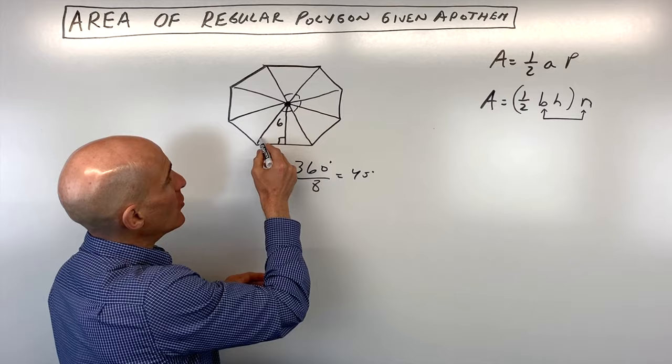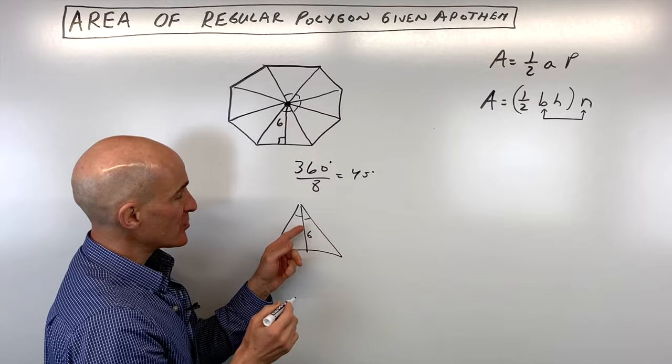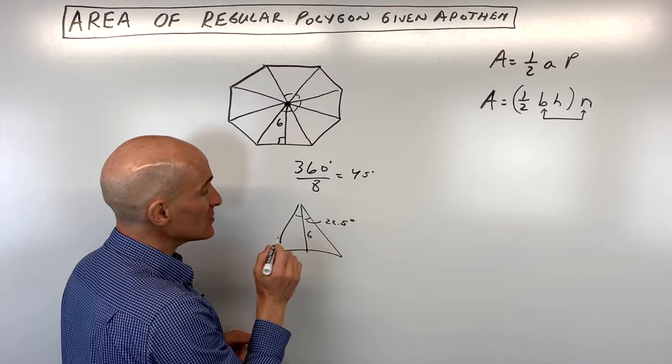But the apothem, what it does is it splits this triangle into two triangles. Okay, because see how that's six. So that means that each of these angles here is going to be half of 45 degrees. It's going to be 22.5 degrees.